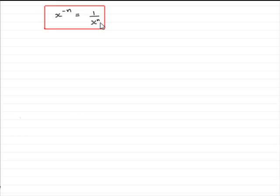So for instance, if you had say 3 to the minus 2, that meant according to this rule that it was 1 over 3 to the power 2, 1 over 3 squared. In other words, 1 ninth.